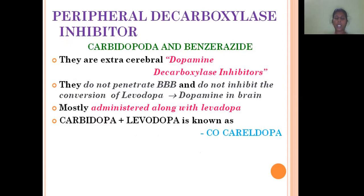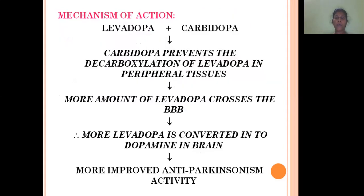Coming to the second group, carbidopa and benserazide are DDC inhibitors — enzyme inhibitors. By combining carbidopa with levodopa, it increases the amount of levodopa crossing the blood-brain barrier. A larger amount of levodopa then crosses the blood-brain barrier, dopamine levels are increased, and there is an improved effect in Parkinson's patients.